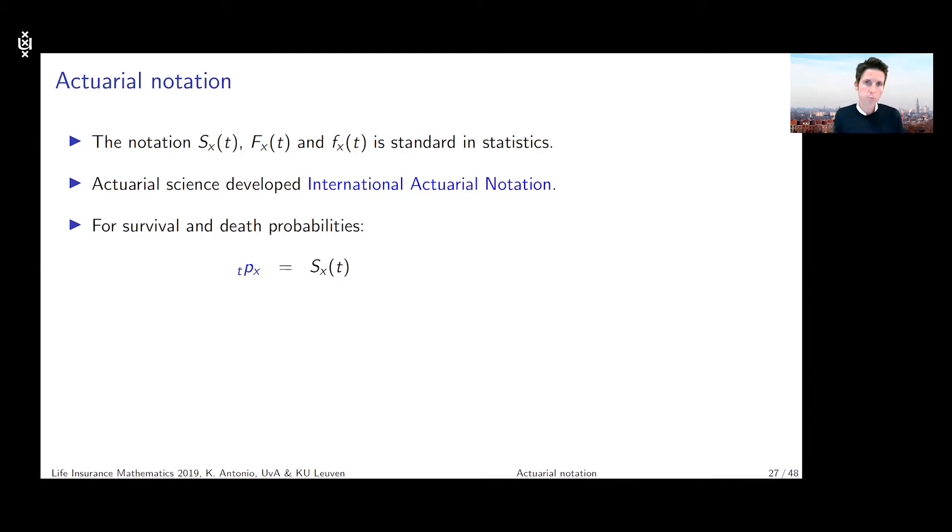So the right subscript x here refers to the age of my policyholder and the t, the left subscript, refers to the duration of the interval over which I want to evaluate, I want to calculate this survival probability. And you know that the survival probability, it's the probability that T_x is beyond t.